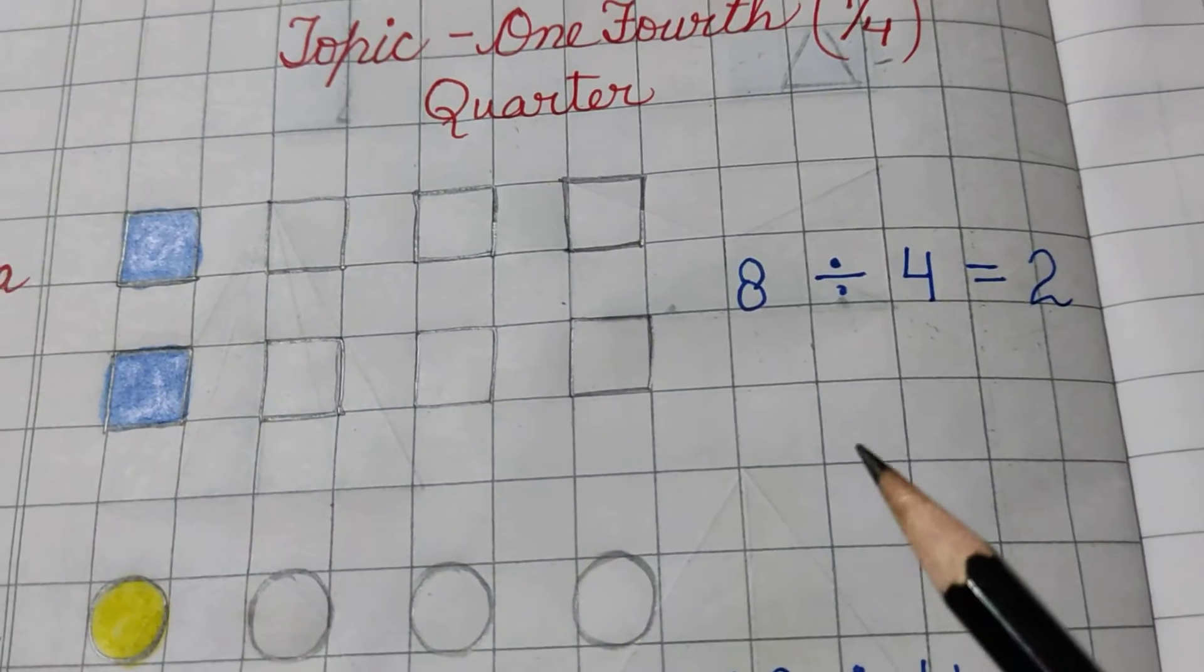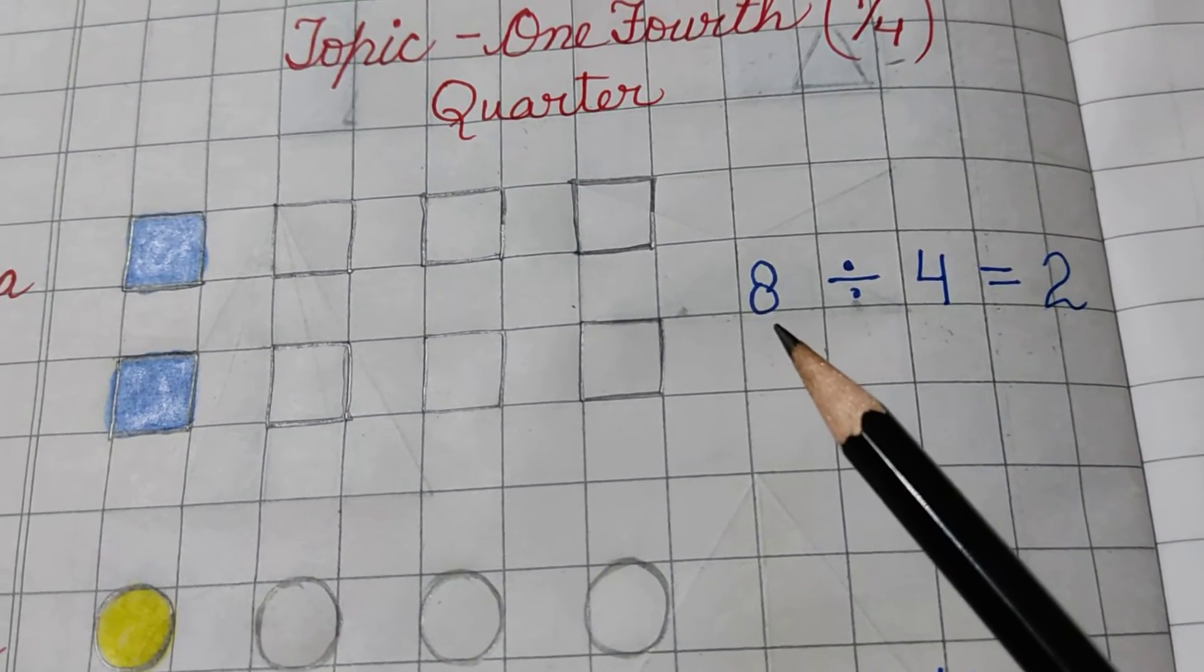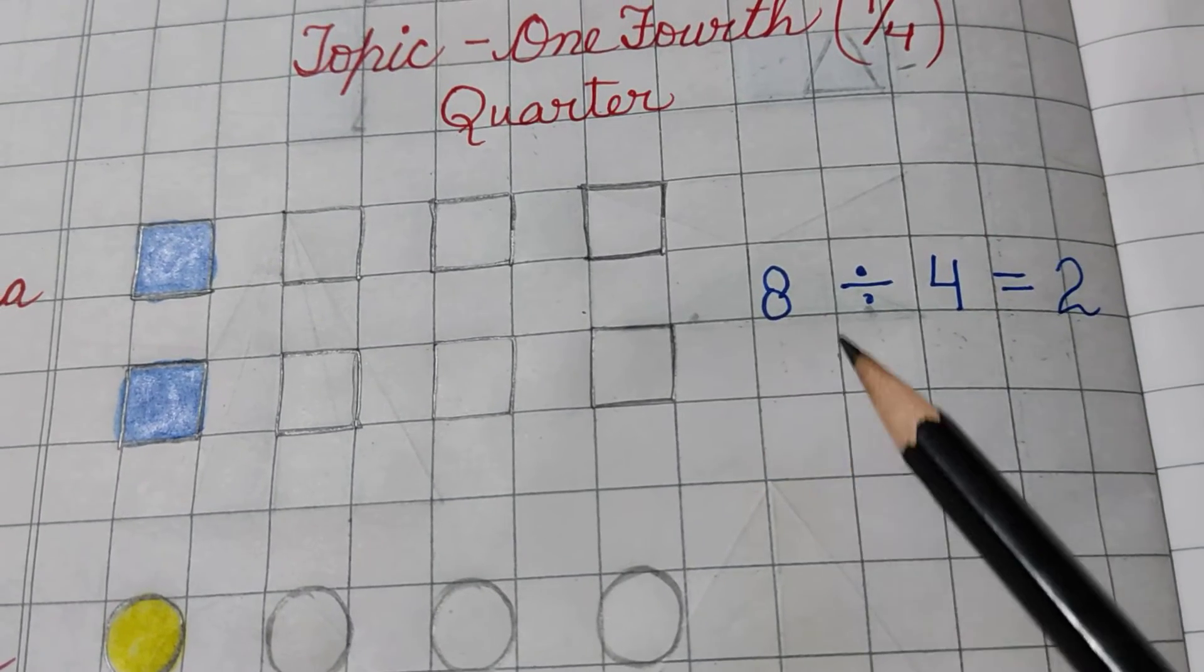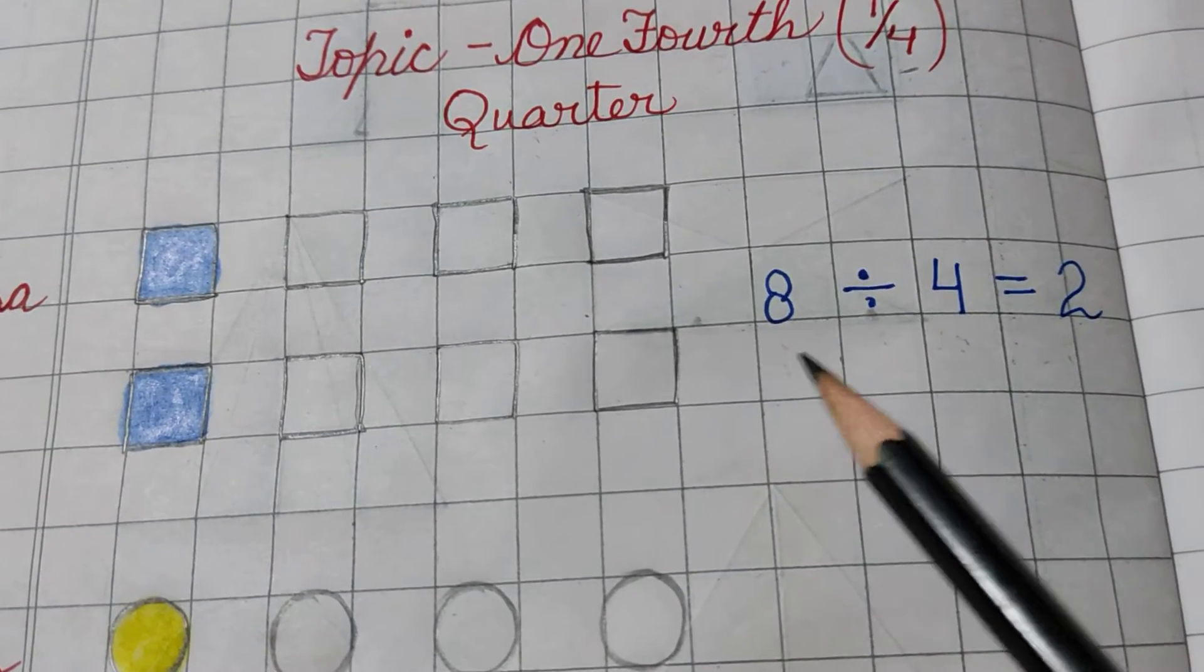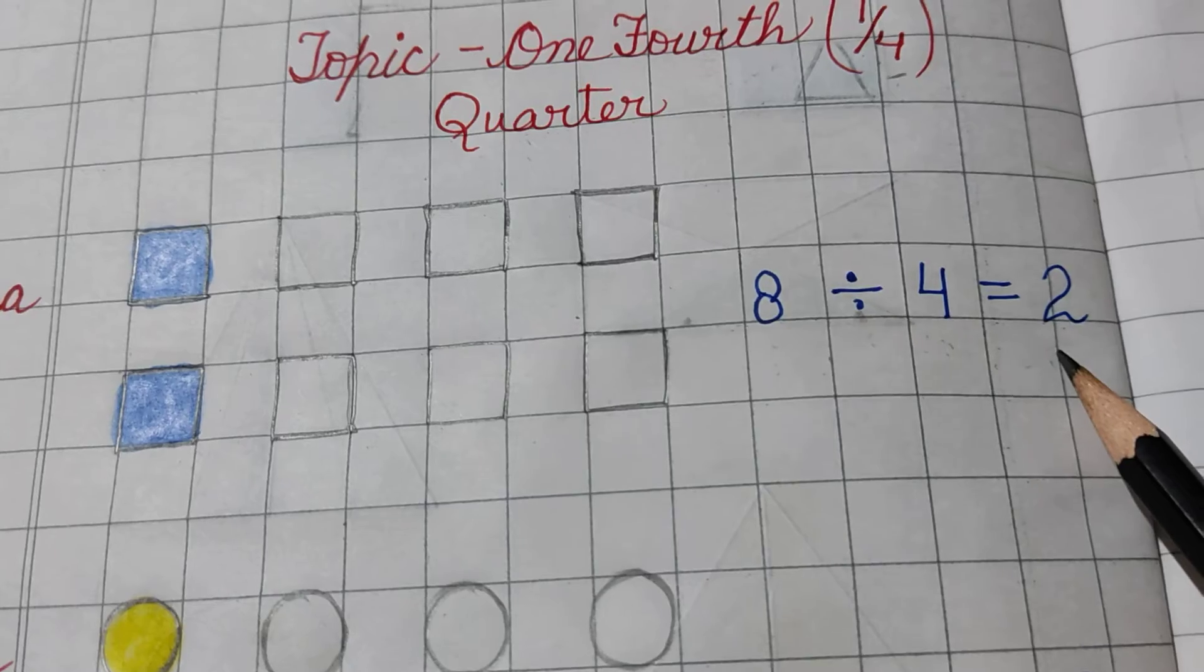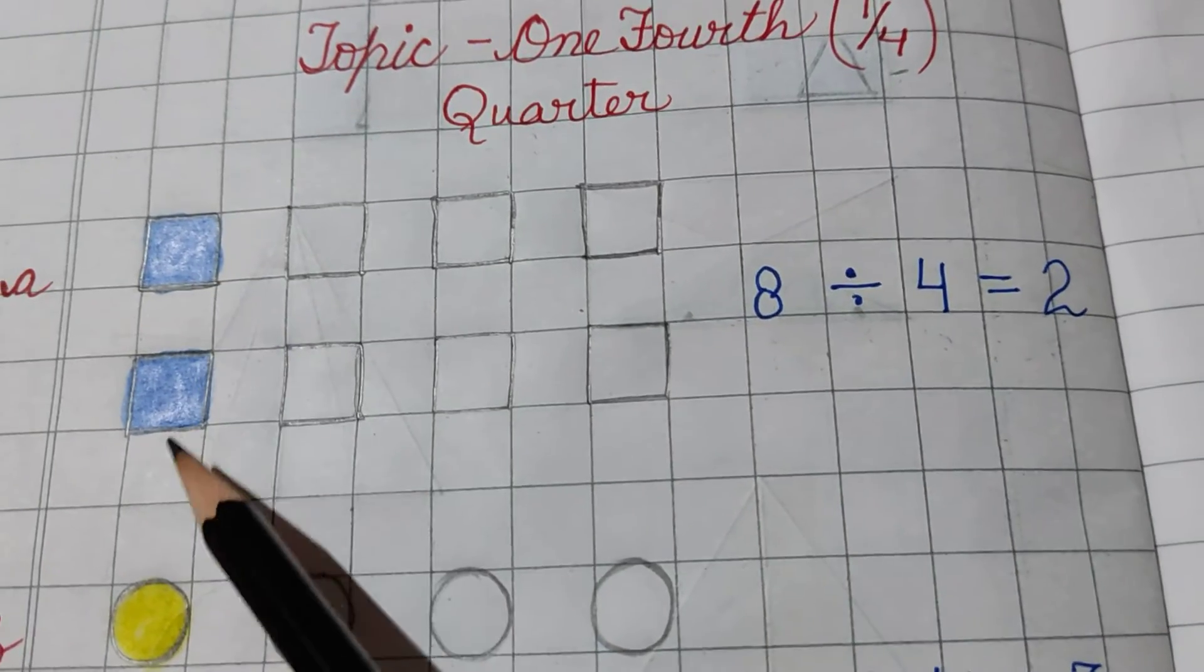That means, 1/4th of 8 is 2. 8 ka one-fourth agar nikala jaye, to uska answer aata hai 2. So, we have to color 2 squares.